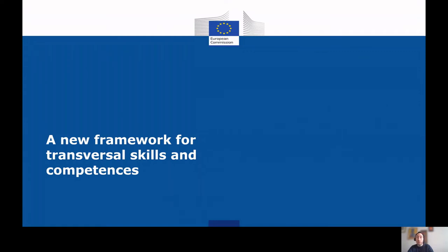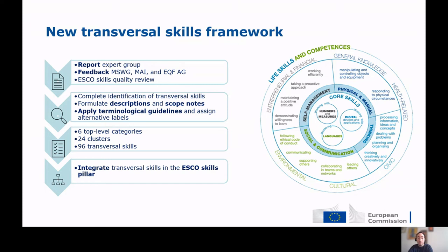We're now going to look at specific updates and sub-sectors of ESCO version 1.1. The first one is the new framework for transversal skills and competence. In 2019, the Commission started working on a revised framework for transversal skills, which addresses the increasing importance of transversal skills in our society and in the labor market. An expert group was created to support the Commission in defining a new terminology for transversal skills. The report of the expert group was presented to the Member States Working Group, the Maintenance Committee, and the European Qualification Framework Advisory Group during the course of 2021, and represented the base for the update of the transversal skills in ESCO.